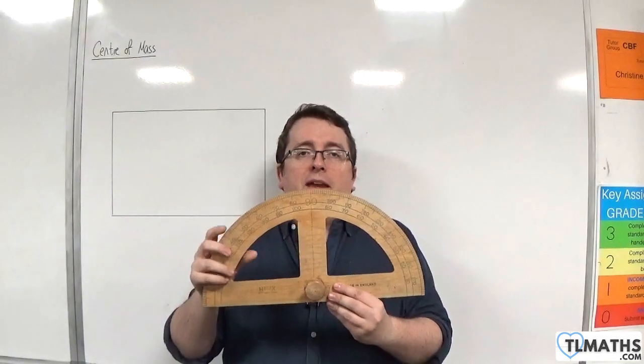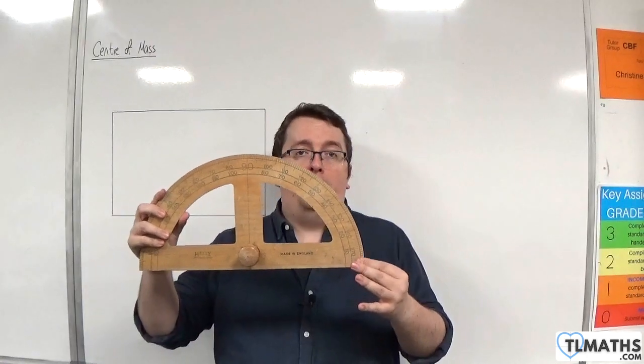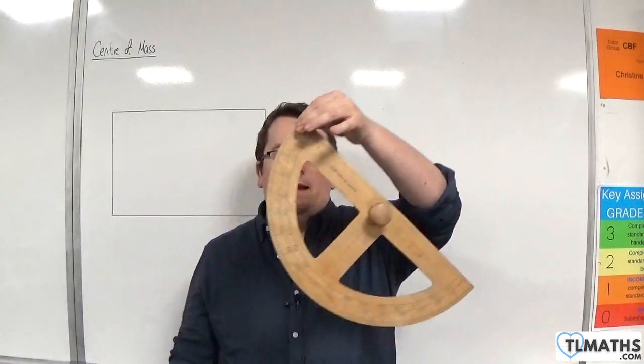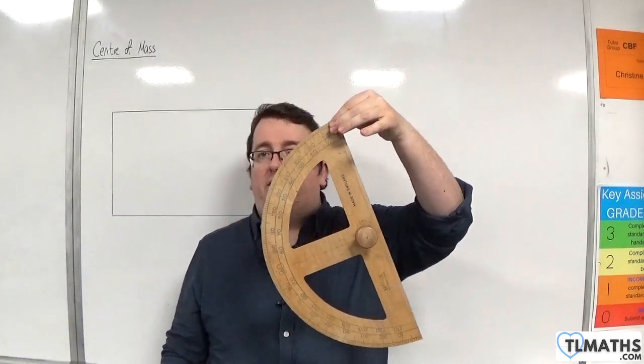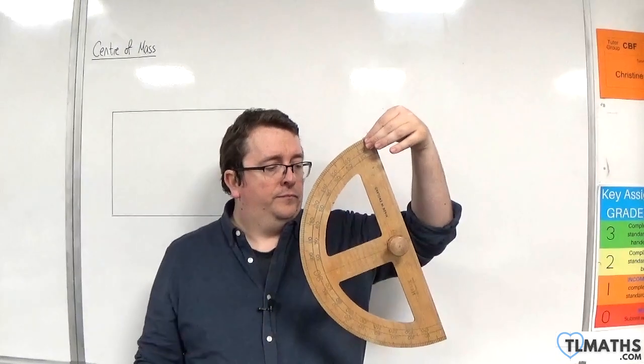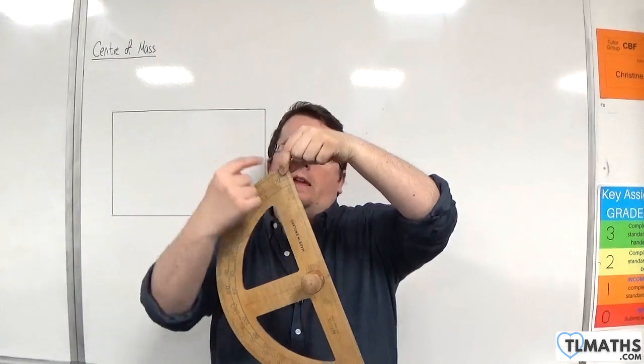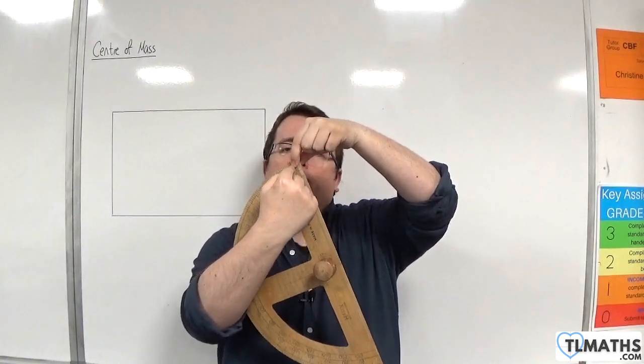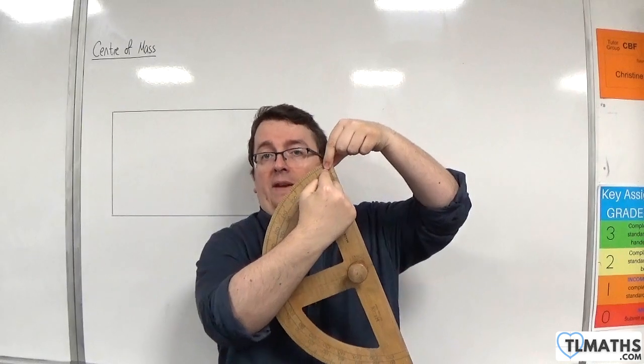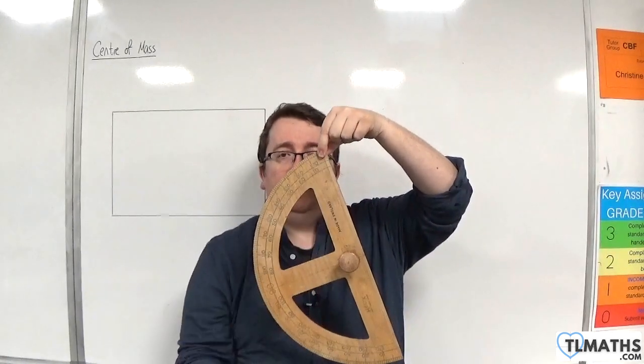So now let's say that I hang it from the corner. So I hang it from the corner and I suspend it like that. Now, what's important to note is the line of action going from the point that I'm suspending it by, vertically downwards.